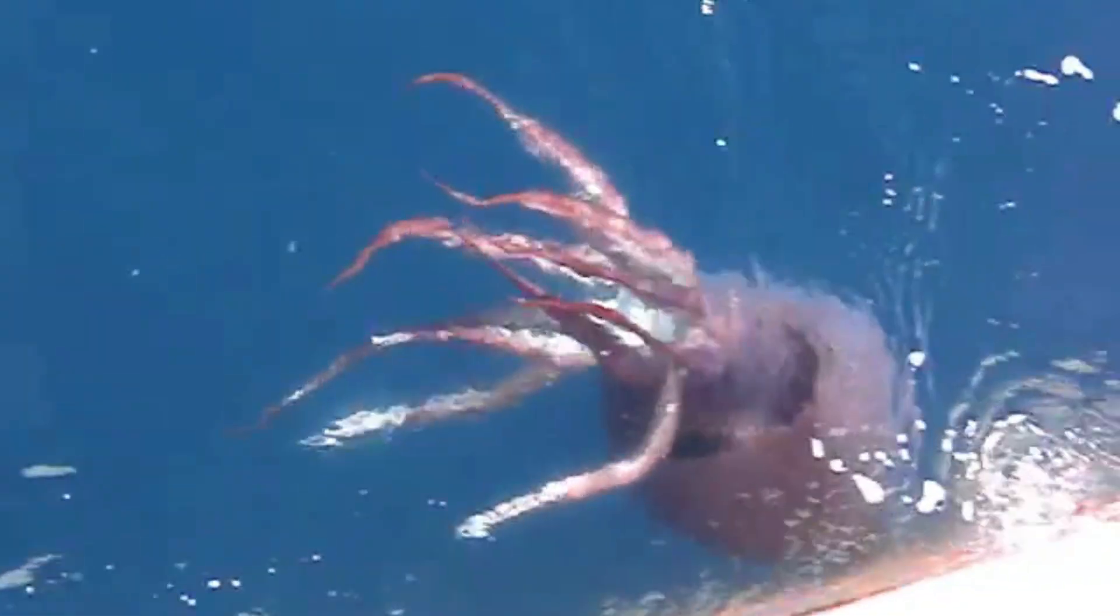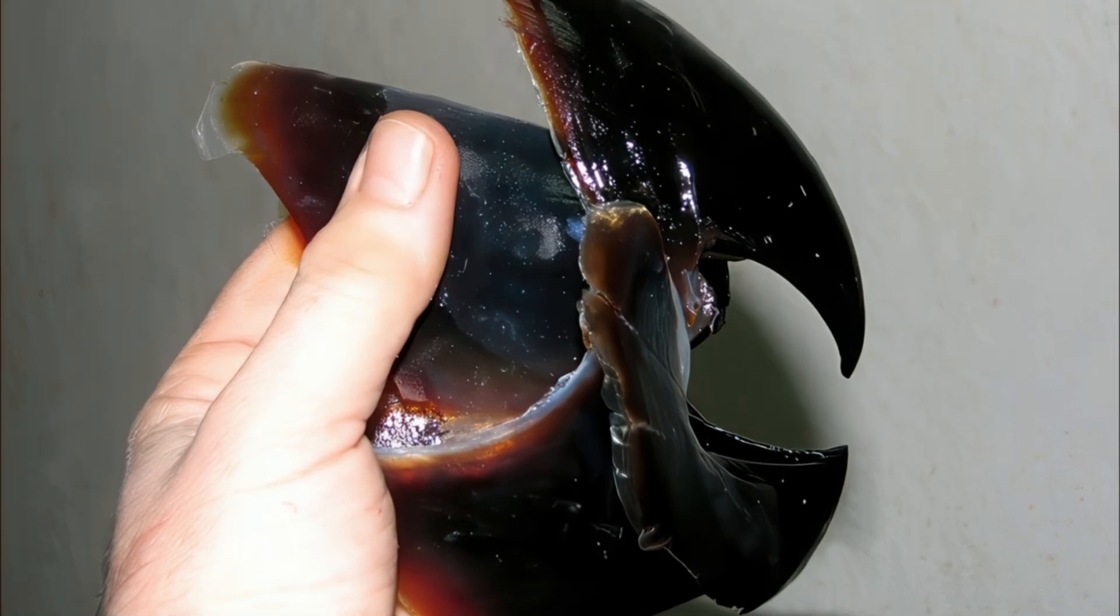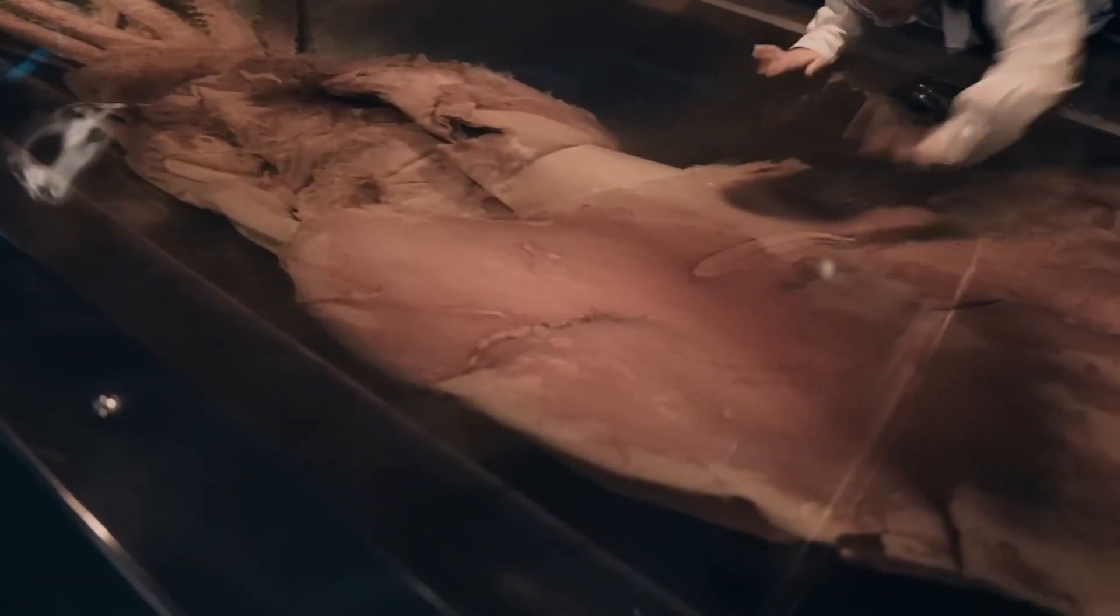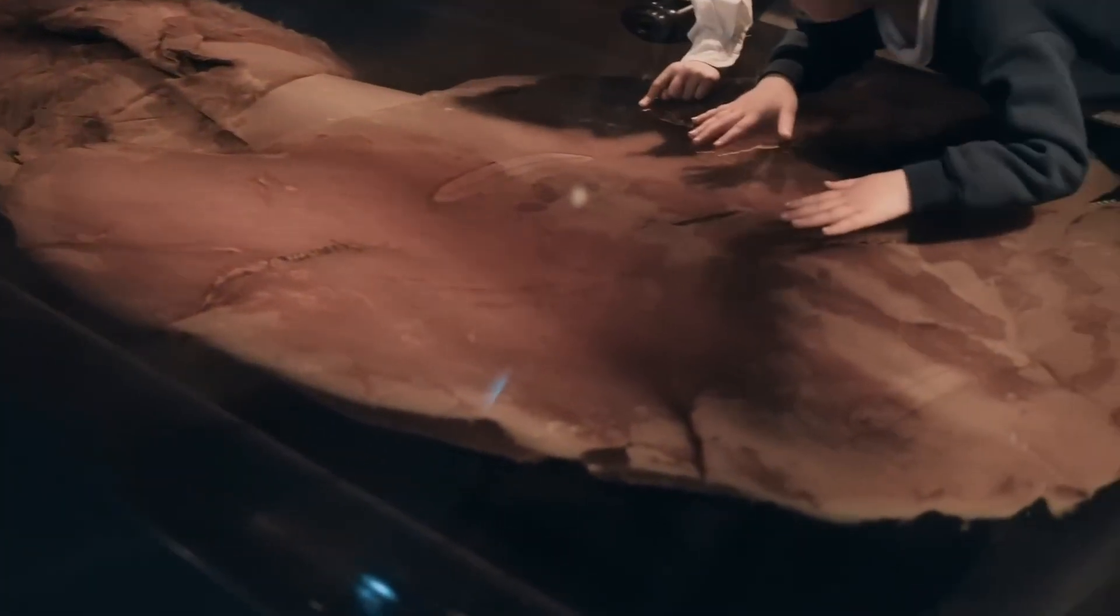Its eyes, 11 inches wide, larger than a softball, can detect even the faintest glint from nearby prey. Its beak can slice straight through bone, and its flesh is infused with ammonia-rich compounds that keep it neutrally buoyant, allowing it to hover without burning energy.